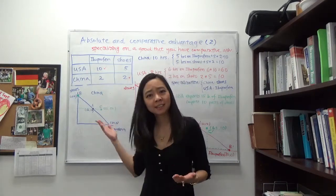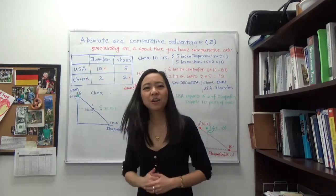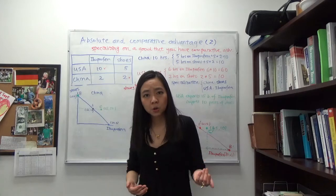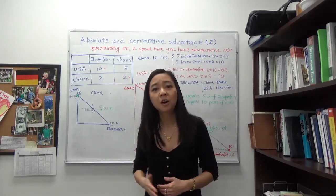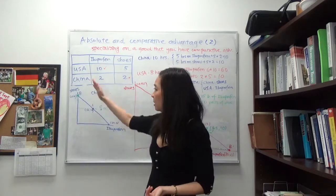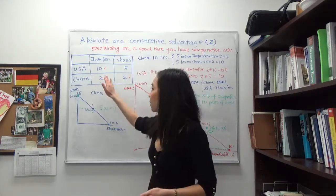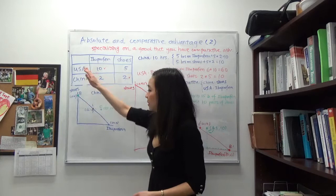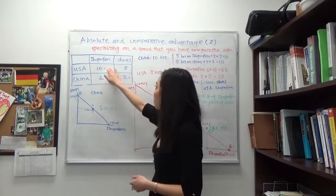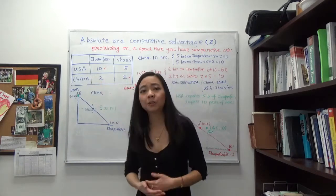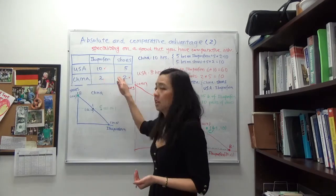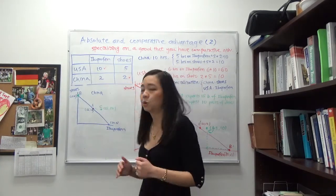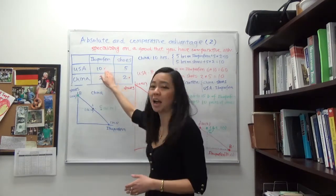We're going to continue with our example from last time. We have two countries, USA and China, and two goods: ibuprofen and shoes. USA can produce either ten bottles of ibuprofen or five pairs of shoes per labor hour. China can produce either two bottles of ibuprofen or two pairs of shoes per labor hour. USA has an absolute advantage in both goods. However, China has a comparative advantage in shoes, whereas USA has a comparative advantage in ibuprofen.